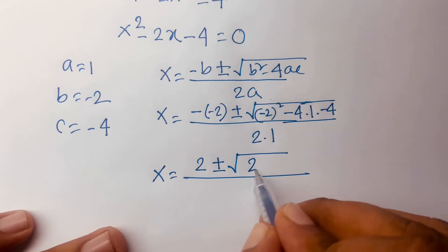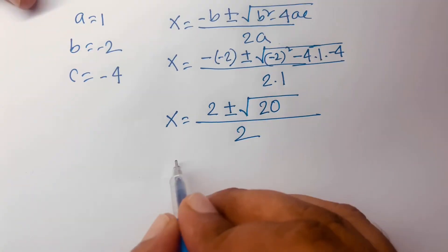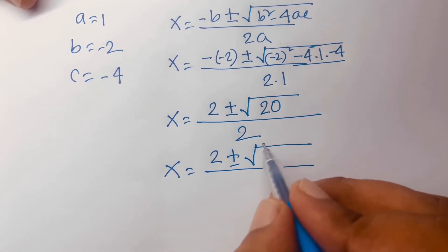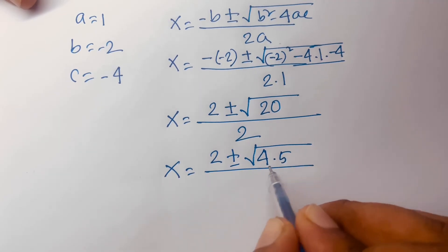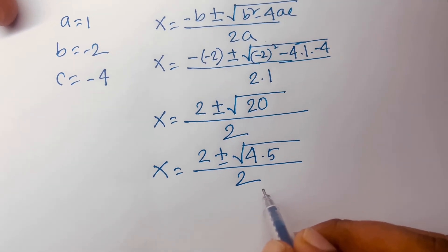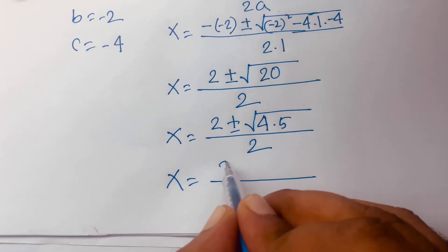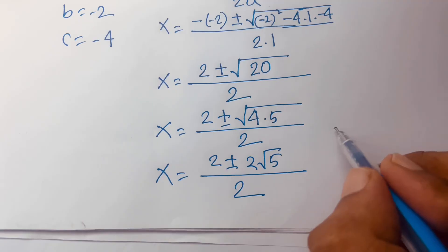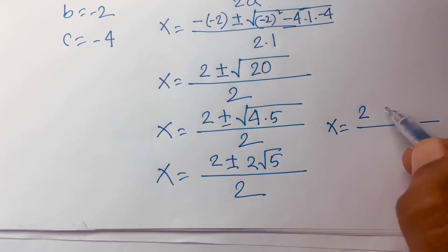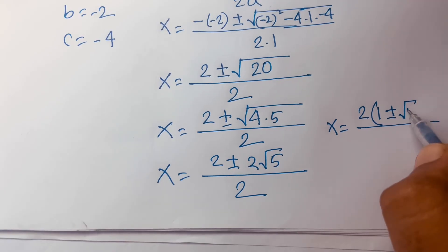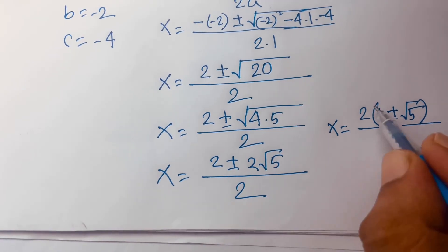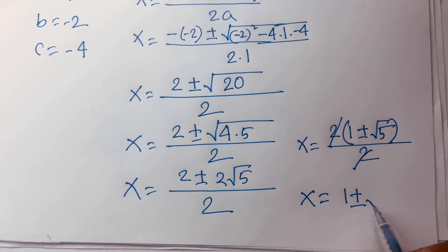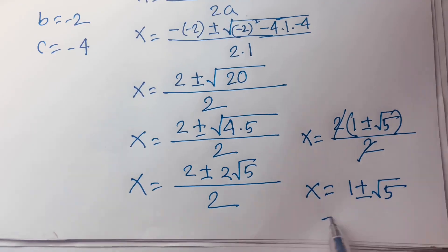I can say 16 plus 4 is 20 over 2. So x is equal to 2 plus or minus square root of 20, which is 4 times 5, over 2. Then x is equal to 2 is common, so we get 1 plus or minus square root 5, over 2. Then 2 cancels, so we find x is equal to 1 plus or minus square root 5. This is our final answer.